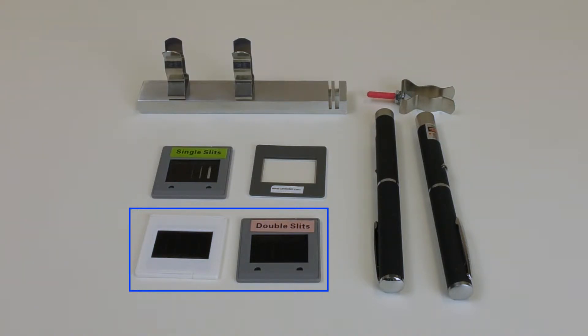One slide has a constant gap with variable slits, the other has a varying gap and constant slits. The kit also comes with a red and green laser pointer, as well as a clip to keep the laser engaged.